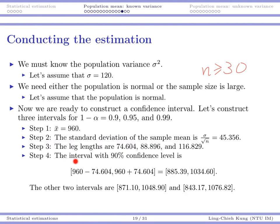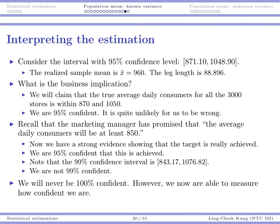The interval with 90% confidence level is found by putting x-bar at the center and going left and right by the leg length. So for the 90% confidence level, it's around 885 to 1034. For the other two intervals, you can also calculate them according to the same formula. Let's consider the interval with 95% confidence level, which is around 870 to 1050.